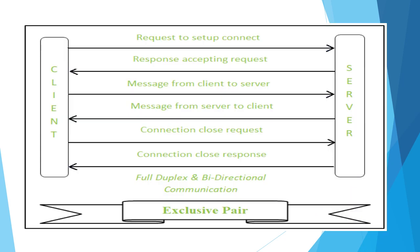Here is the graphical representation of the Exclusive Pair model. First, the client makes a request for setting up the connection with the server. The server accepts the client request and makes a connection. Once the connection is established between client and server, messages from client to server and server to client take place. Finally, a connection close request is sent from the client, accepted by the server, and the connection is closed. This is the full-duplex and bi-directional Exclusive Pair model.